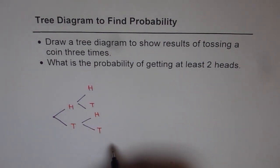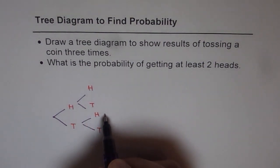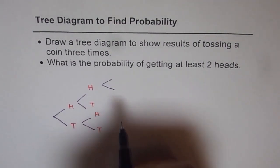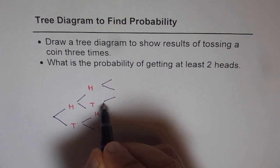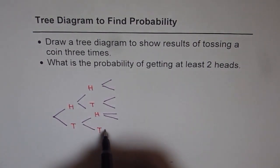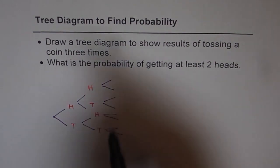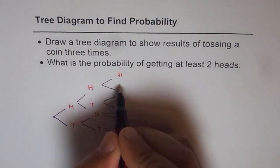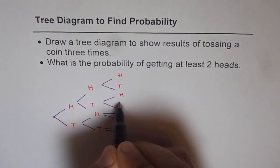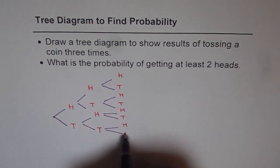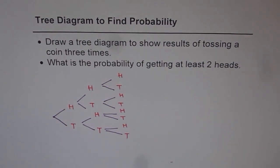Now when you toss it for the third time, there are only two possibilities, and both are equally likely — head or tail. So we get head or tail, and head or tail. So let's write it down. We have the possibility of getting head or tail, head or tail, head or tail, head or tail.